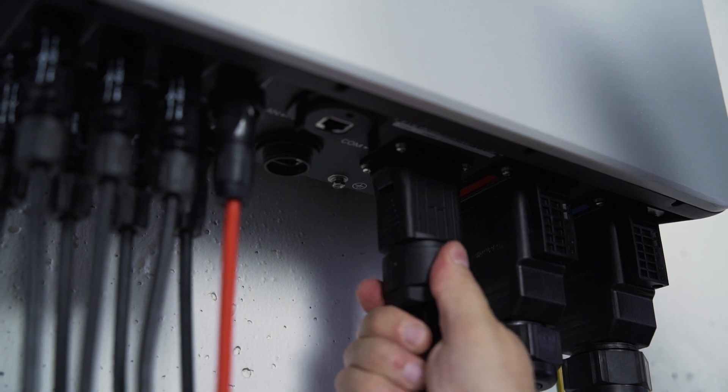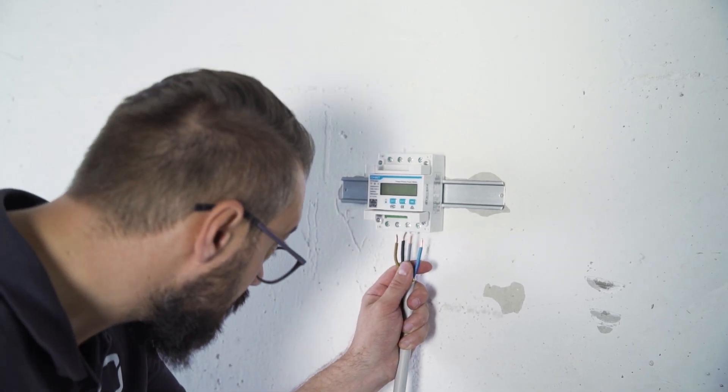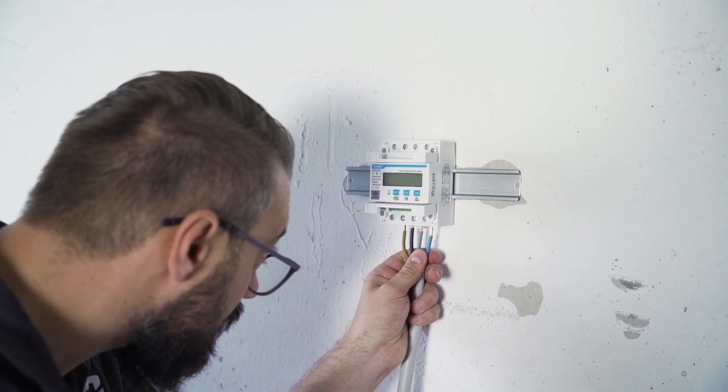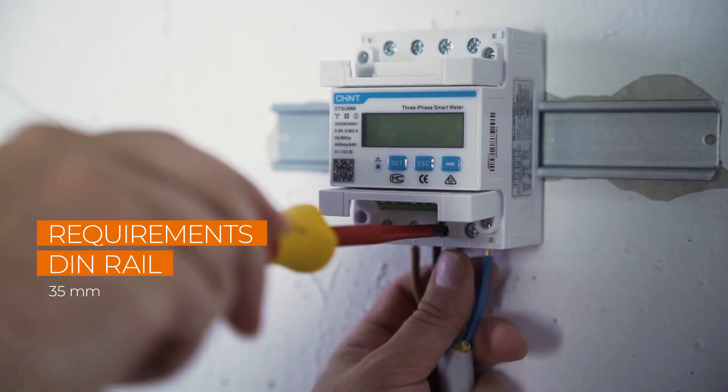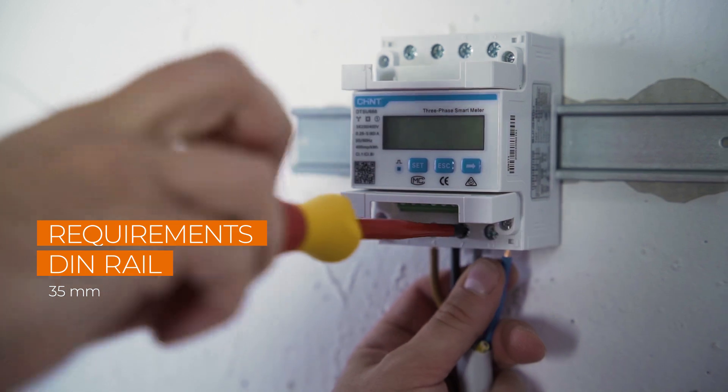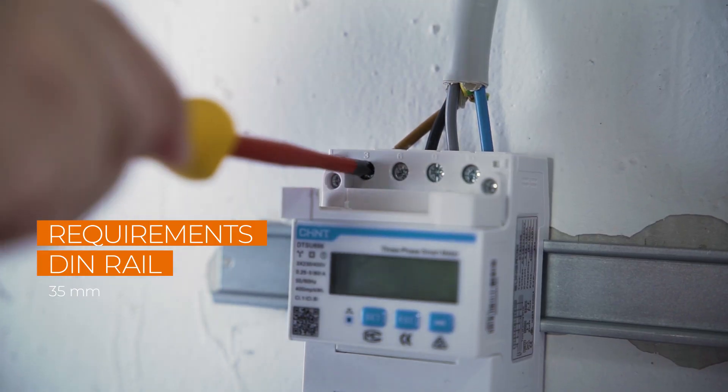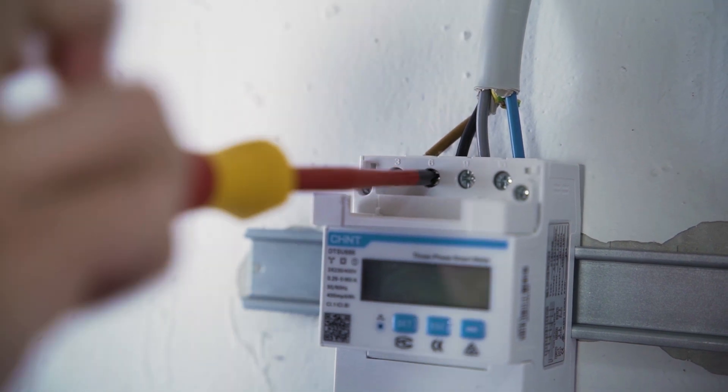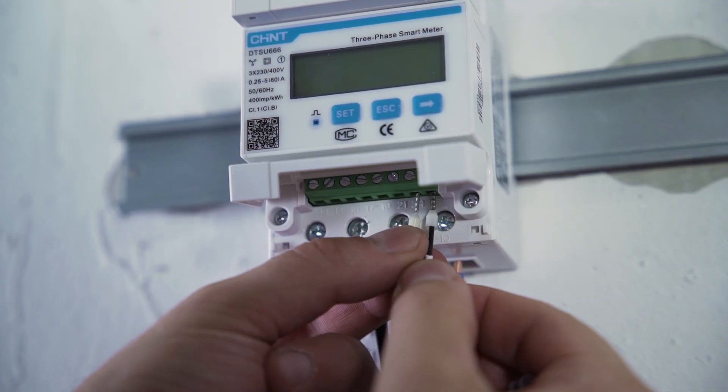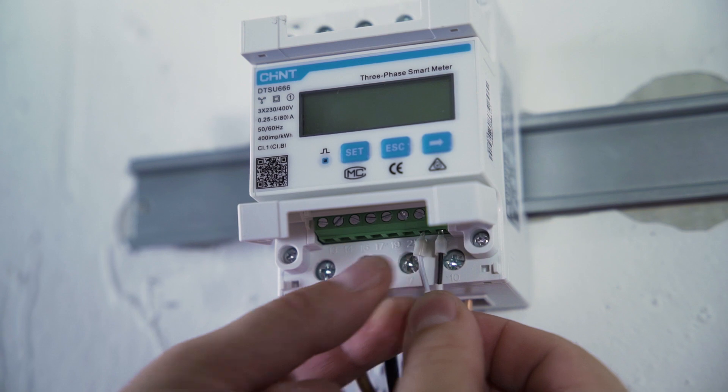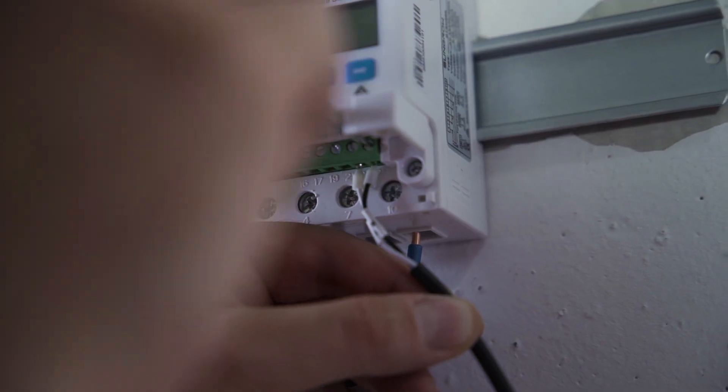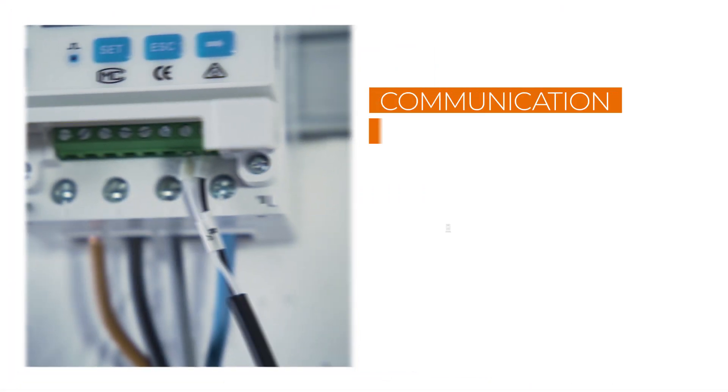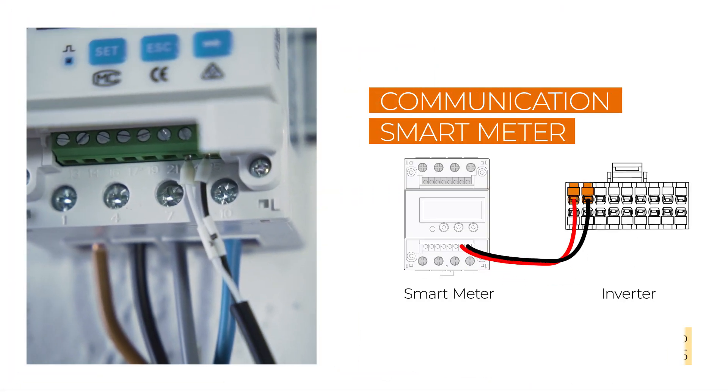To enable the inverter to use all functions, the smart energy meter must be connected. This is mounted on a DIN rail and then connected to the power cable. The power goes into the meter at the bottom and comes out at the top. The meter cable has already been connected to the inverter via the communication plug. Now it must be connected to the smart energy meter. For this you have to connect the cable to pins 24 and 25.